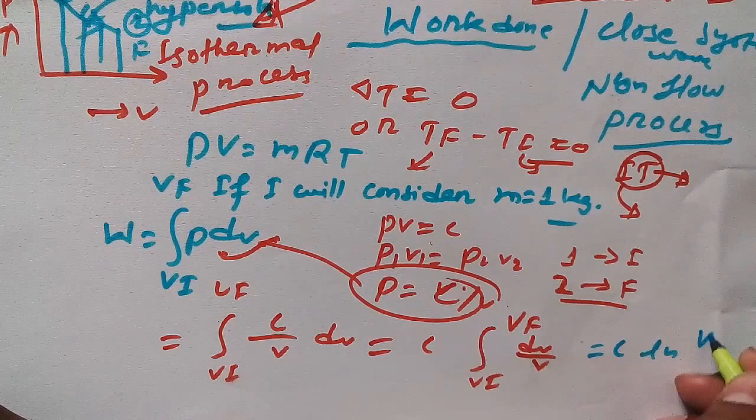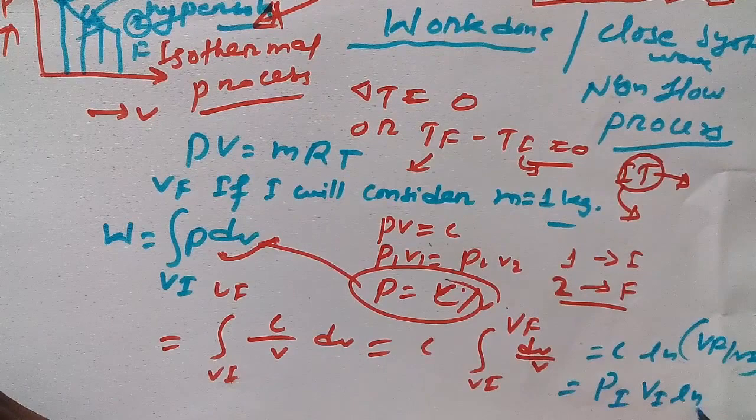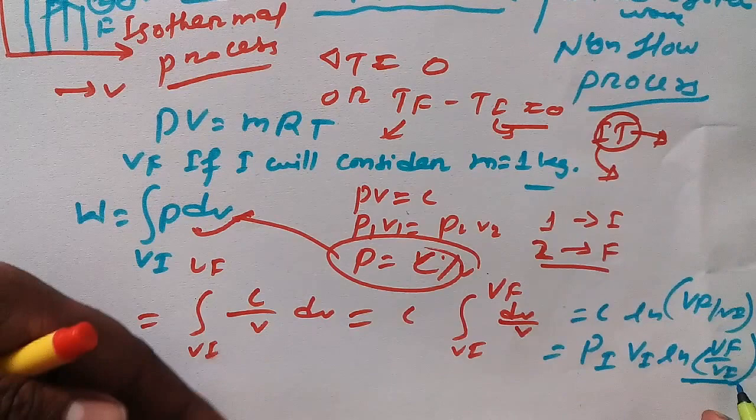Now what I have to do? DV and V is there. As you know, this is the concept of integration, this will be natural log. Now C ln VF minus, I mean VF by VI.